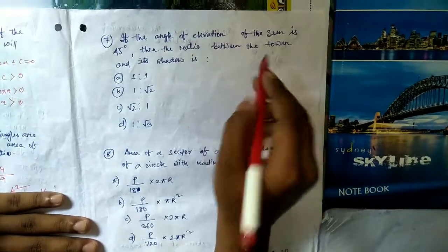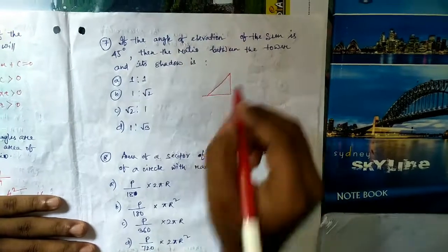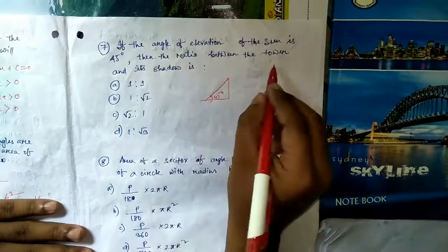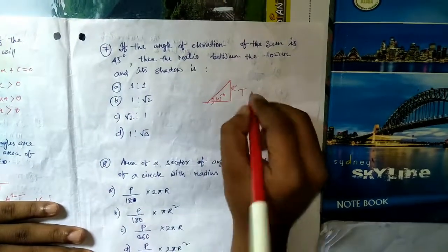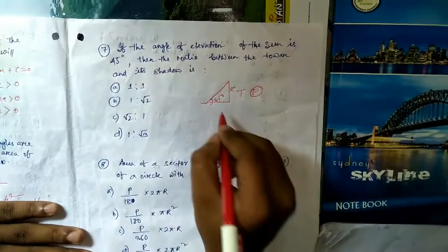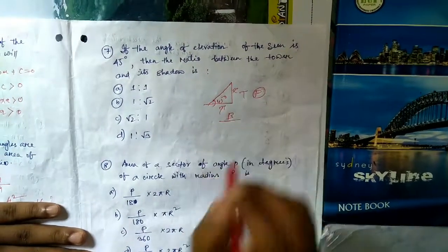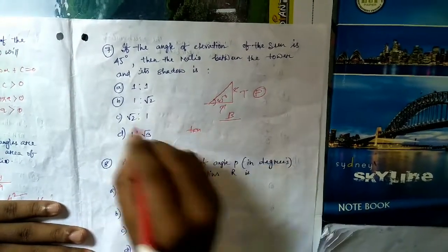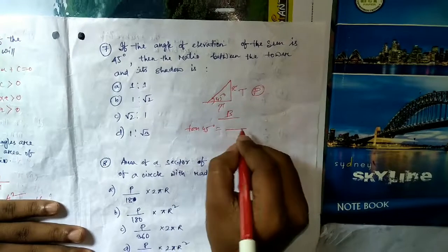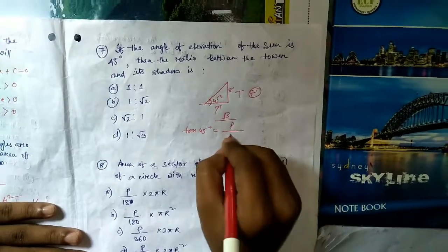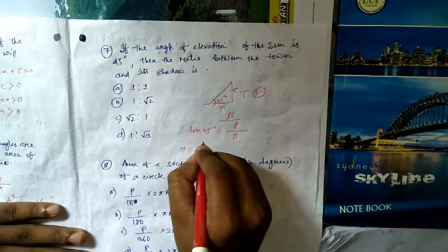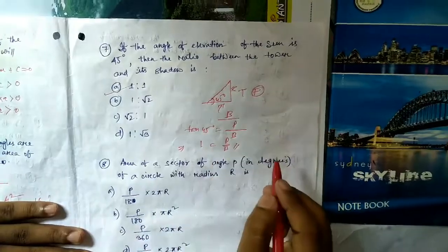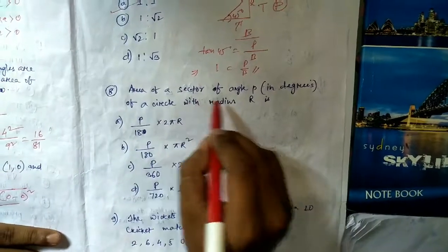Question number seven: if the angle of elevation of the sun is 45 degrees, find the ratio between the tower (perpendicular) and its shadow (base). tan(45°) = perpendicular by base. Since tan 45° = 1, we get p/b = 1:1. The ratio of the tower to its shadow is 1:1.